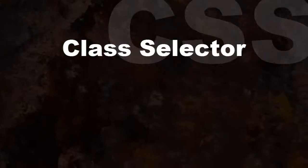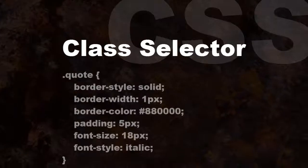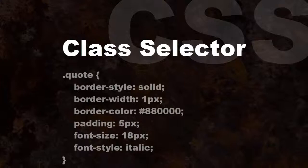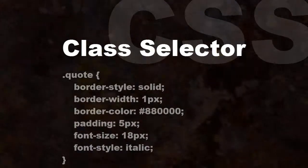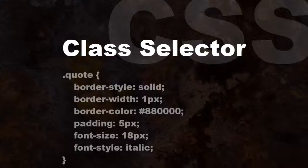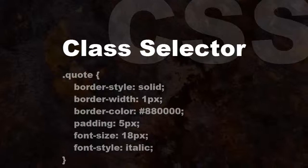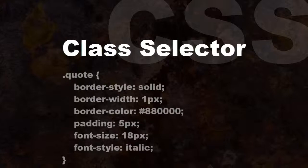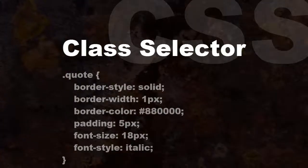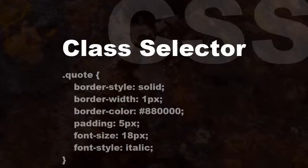The class selector selects all elements with a specific class attribute. For example: .quote { border-style: solid; border-width: 1px; border-color: #880000; padding: 5px; font-size: 18px; font-style: italic; }. Here we see a class called quote which uses larger type, italics, and a dark red border.